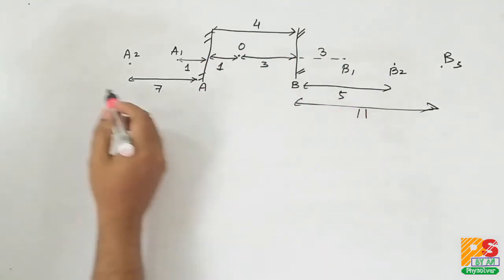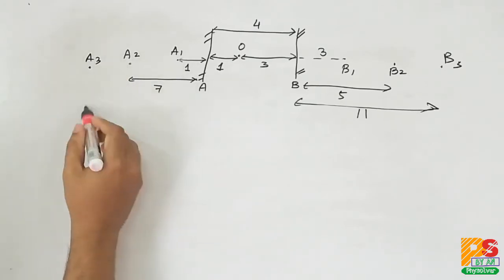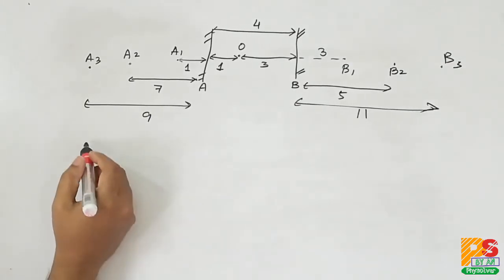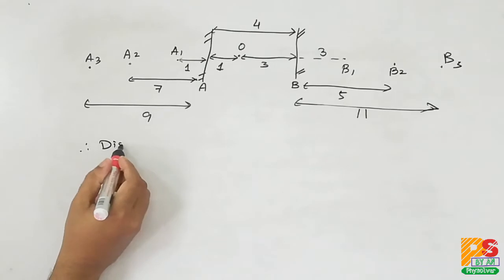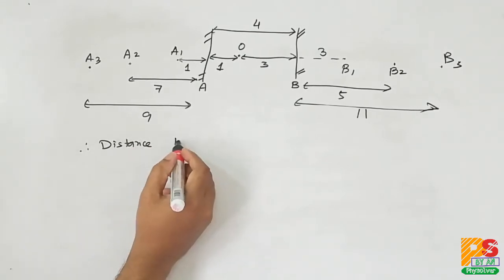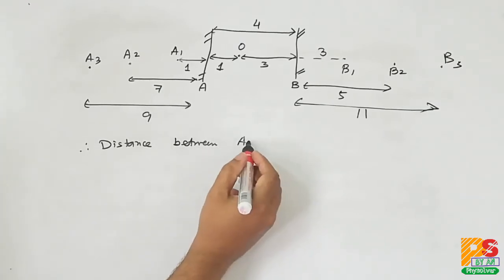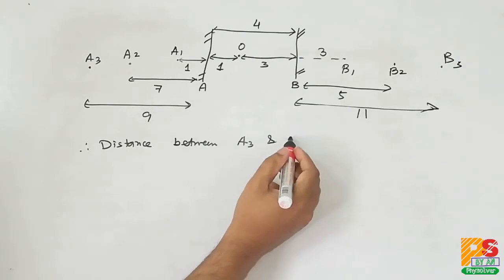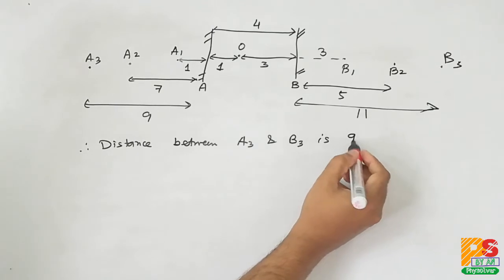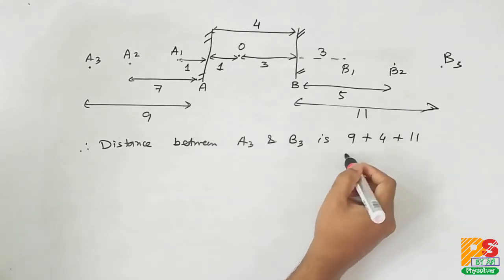B2 will act as virtual object for A, forming the third image A3 at a distance of 9 cm behind A. Therefore, the distance between the third image behind A (A3) and the third image behind B (B3) is 9 plus 4 plus 11, that is 24 cm.